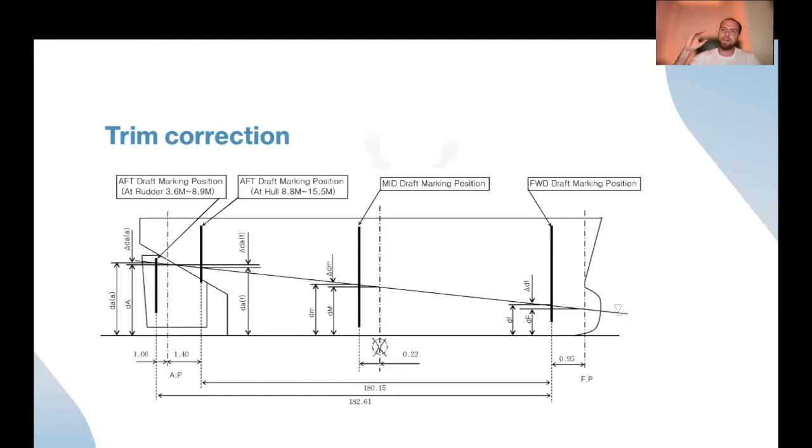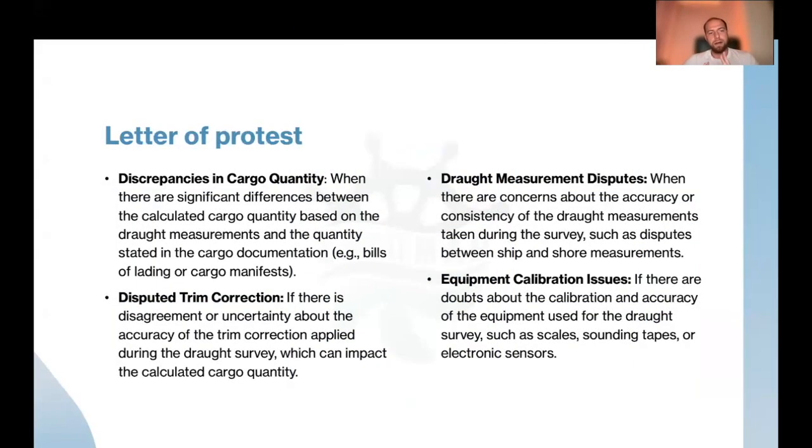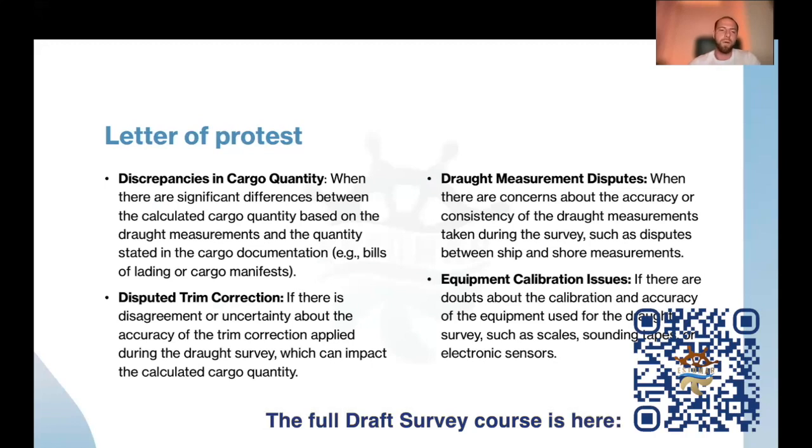If we have discrepancies in cargo quantity, obvious reason: when there are significant differences between calculated cargo quantity based on the draft measurements and the quantity stated on the cargo documentation. In this case, you need to prepare. You need to know the stevedores company, the surveyor company. All these things need to be collected before you declare any letter of protest.